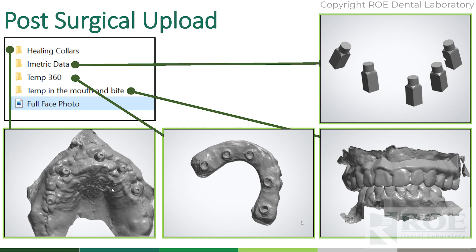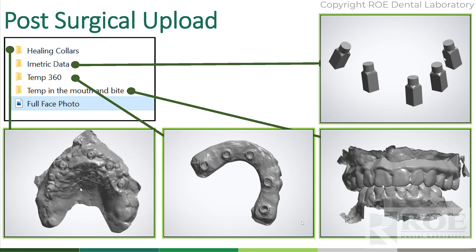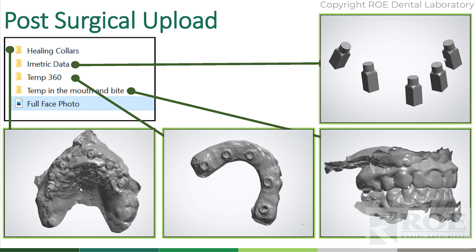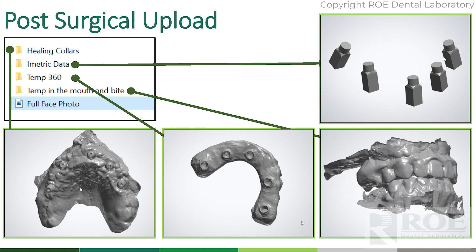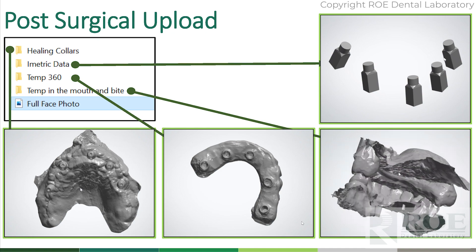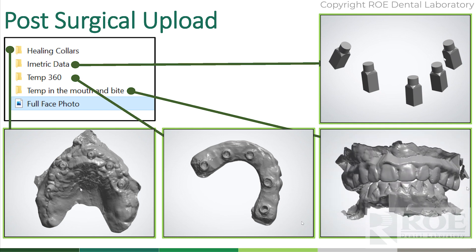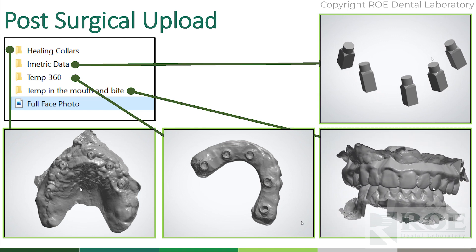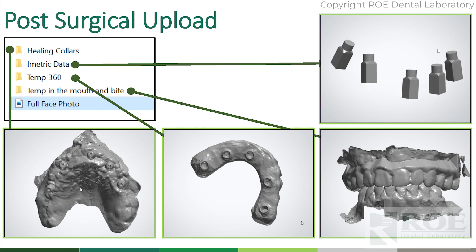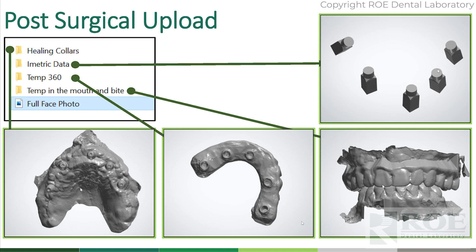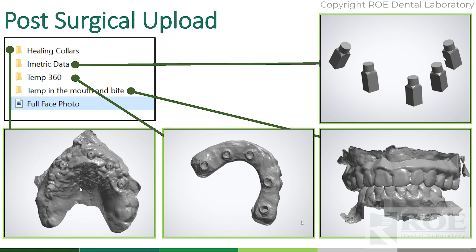You could use the same scan flags from surgery if you have those, but things change, so I would probably go ahead and take a new scan flag — a domino scan. Then seat the prosthesis in the mouth and scan the bite. Scan as much of the bite as you can and get a really nice scan. This patient just has a little bit of contact here and here — capture the bite and capture some of the tissue. There's your bite scan. Then export the iCAM files or the PIC files. This is what you upload: a folder containing the healing collar scan, the iMetric export, the temporary 360 scan, the temporary in bite position, and of course always a full face, full smile photo and an exaggerated smile.